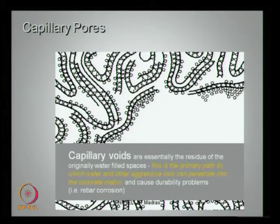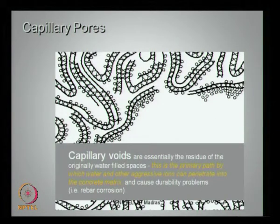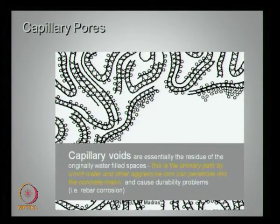Capillary voids are essentially the residue of originally water-filled spaces. This is the primary path by which water and other aggressive ions can penetrate into the concrete matrix and cause serious durability problems. For example, the reinforced bar gets corroded when water is entrained in these water-filled spaces, or what we call capillary voids. When these capillary voids start attracting water from moisture content or from the sea environment, it enables aggressive ions to penetrate, causing very serious durability problems to concrete.